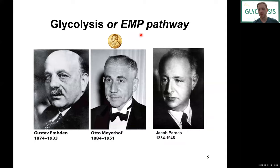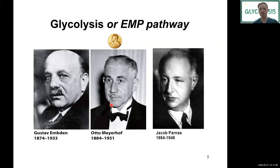The gentlemen who did much of the work identifying how glycolysis works were Gustav Embden, Otto Meyerhof, and Jacob Parnas. They worked independently in different countries on various aspects of this. The only one who received a Nobel Prize — for his work on substrate phosphorylation — was Otto Meyerhof. This work was developed around the 1940s and earlier, using humans and yeast as organisms.